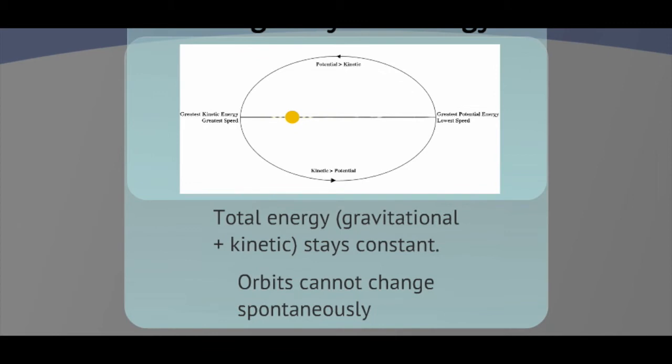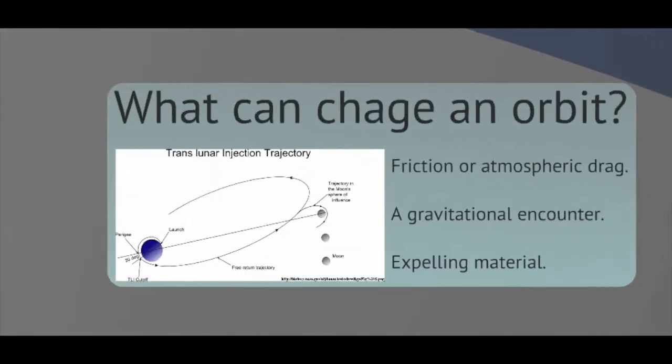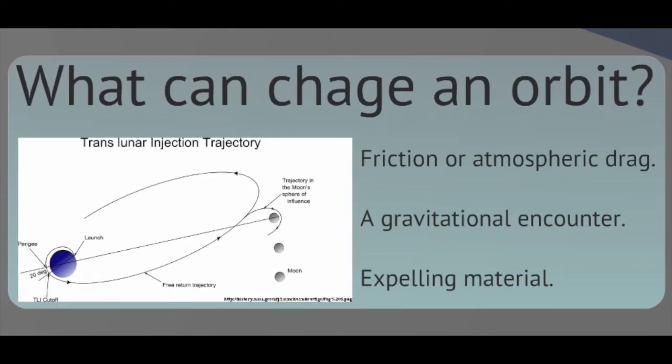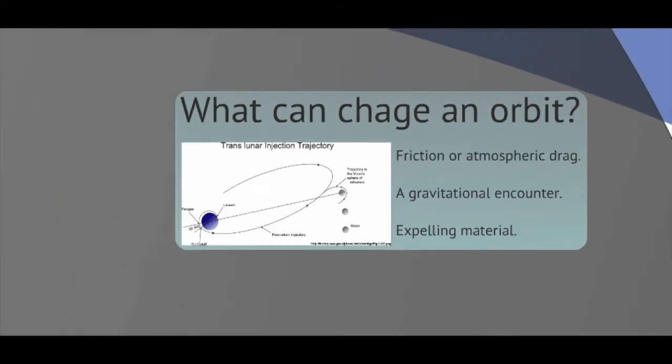So unless there's something that causes that to change, my orbit will continuously stay in place. Some of the things that can change it might be atmospheric drag or some sort of friction. I might have a gravitational encounter. A large object might come by and disturb my orbit, or I might have an explosion which expels some material. Those kinds of things can change the orbit of my body.